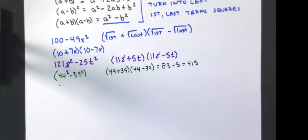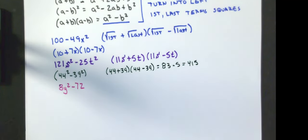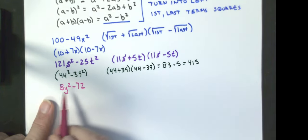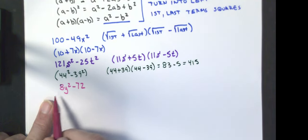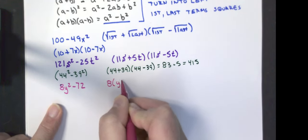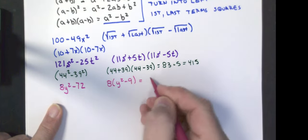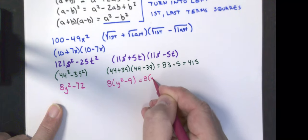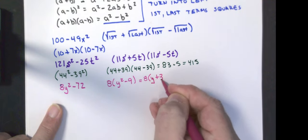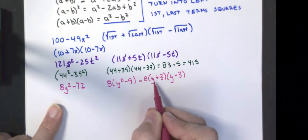Let's do one more with a nuance: 8y² minus 72. Notice 8 is not a perfect square, but 8 goes into both terms. So we factor out the greatest common factor first, giving us 8 times (y² minus 9). That follows the difference of squares pattern, so we keep the 8 and get 8 times (y + 3) times (y minus 3).